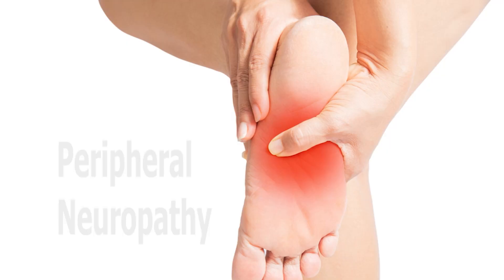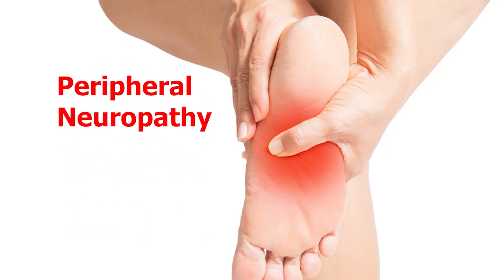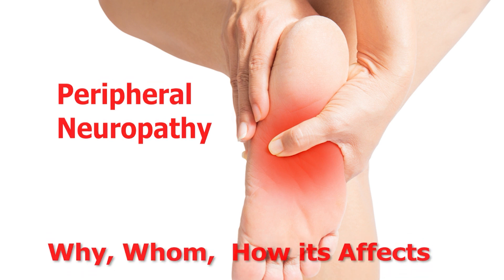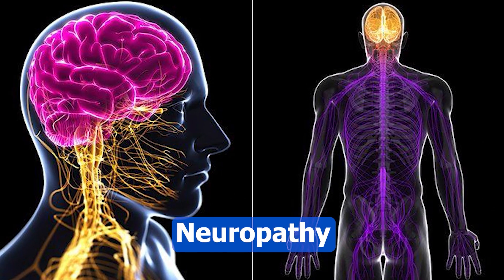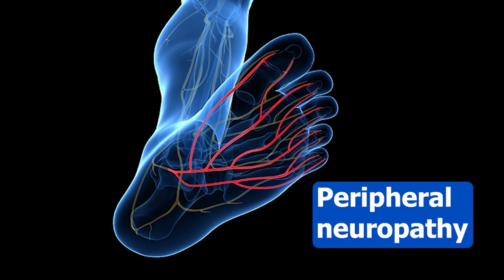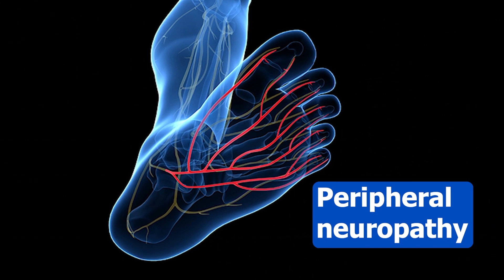Hello friends, good morning. Today's topic is going to be peripheral neuropathy — let us see why it comes, for whom it comes, and how it affects you. When your nerves get affected, they are called neuropathy. If the nerves are affected in the periphery of the body — that is your foot and hand — then it is called peripheral neuropathy.